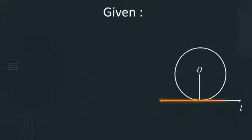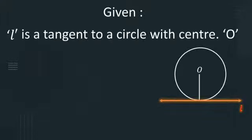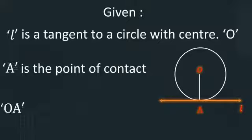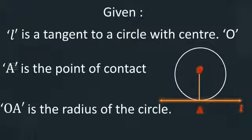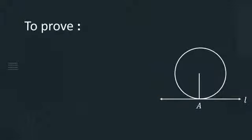What we have been given? L is a tangent to a circle with center O. A is the point of contact. OA is the radius of the circle. We have to prove OA is perpendicular to AL.